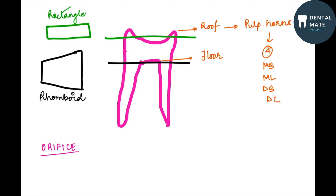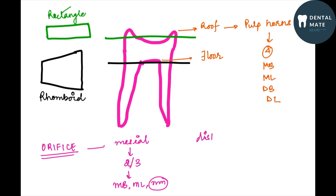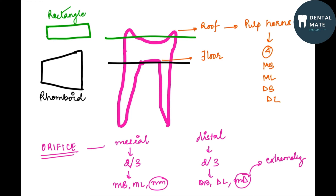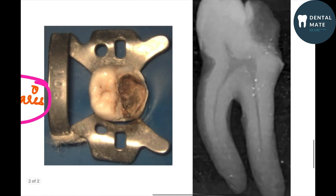If we talk about the orifices present at the cementoenamel junction level: on the mesial side there could be two or three orifices — mesiobuccal, mesiolingual, and an extra mid-mesial orifice. On the distal side there could be distobuccal, distolingual, or an extra mid-distal orifice, which is extremely rare to find.